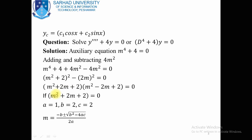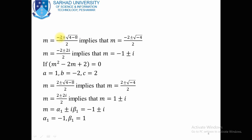First, solve the quadratic equation m² + 2m + 2 = 0 using the quadratic formula. Coefficients: a = 1, b = 2, c = 2. So m = (-b ± √(b² - 4ac)) / 2a = (-2 ± √(4-8)) / 2 = (-2 ± √(-4)) / 2. Since √(-4) = 2iota, taking common factor 2, we obtain m = -1 ± iota. So alpha = -1 and beta = 1 from the first quadratic equation.